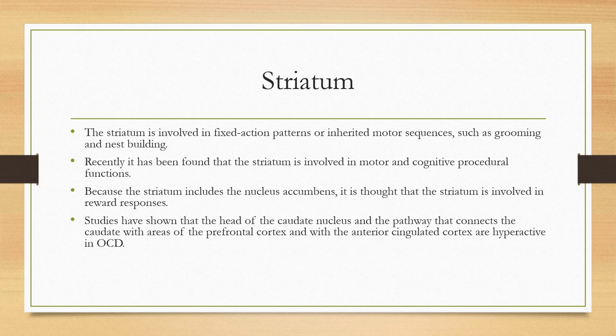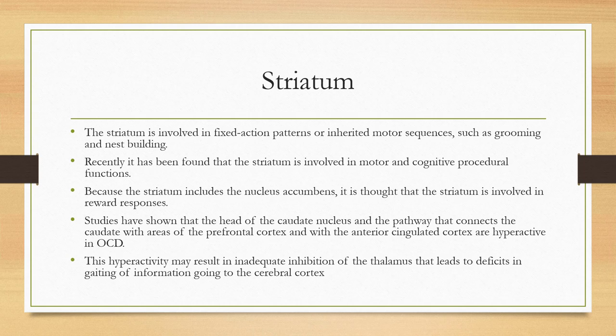Studies have shown that the head of the caudate nucleus and the pathway connecting the caudate with areas of the prefrontal cortex and the anterior cingulate cortex are hyperactive in obsessive-compulsive and related disorders. This hyperactivity may result in inadequate inhibition of the thalamus, leading to deficits in the gating of information going to the cerebral cortex — in other words, the inhibition that should be in place to limit information flow is impaired.